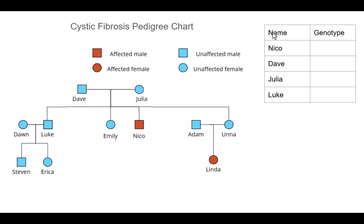I've identified four names in the table and we're going to work through the genotypes for those individuals. Starting with Niko — we can see that Niko is an affected male. Male because of the square box, and the color indicates the presence or absence of cystic fibrosis. As an affected male, and knowing that cystic fibrosis is a recessive characteristic, Niko must be lowercase f, lowercase f — homozygous recessive.